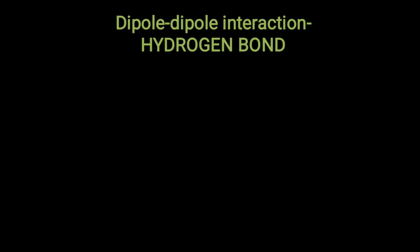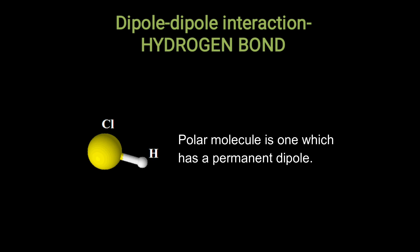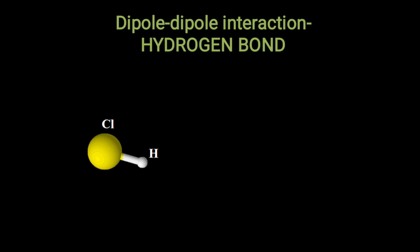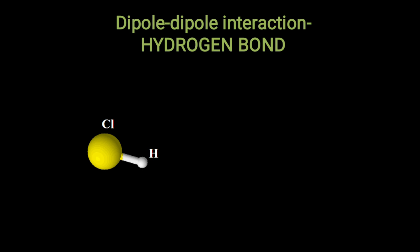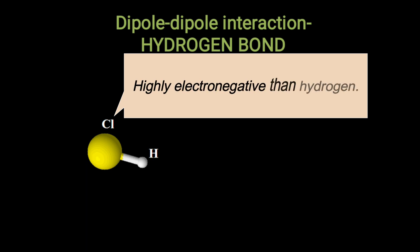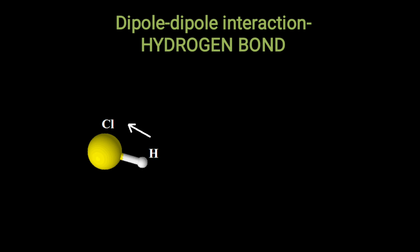Next we are going to see dipole-dipole interaction. What is a polar molecule? A polar molecule is one which has a permanent dipole. This existence of a dipole is due to the difference in the electronegativity of the atoms involved. See here in hydrogen chloride — chlorine is highly electronegative than hydrogen, so it attracts the electrons of hydrogen towards it, causing a partial positive charge on hydrogen and a partial negative charge on chlorine.